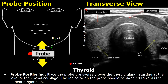The thyroid is seen in the transverse plane. The right lobe of the thyroid will be on the left side of the image, and the left lobe will be on the right side of the image or screen. The isthmus will always be seen at the upper half of the image, and these are the strap muscles.